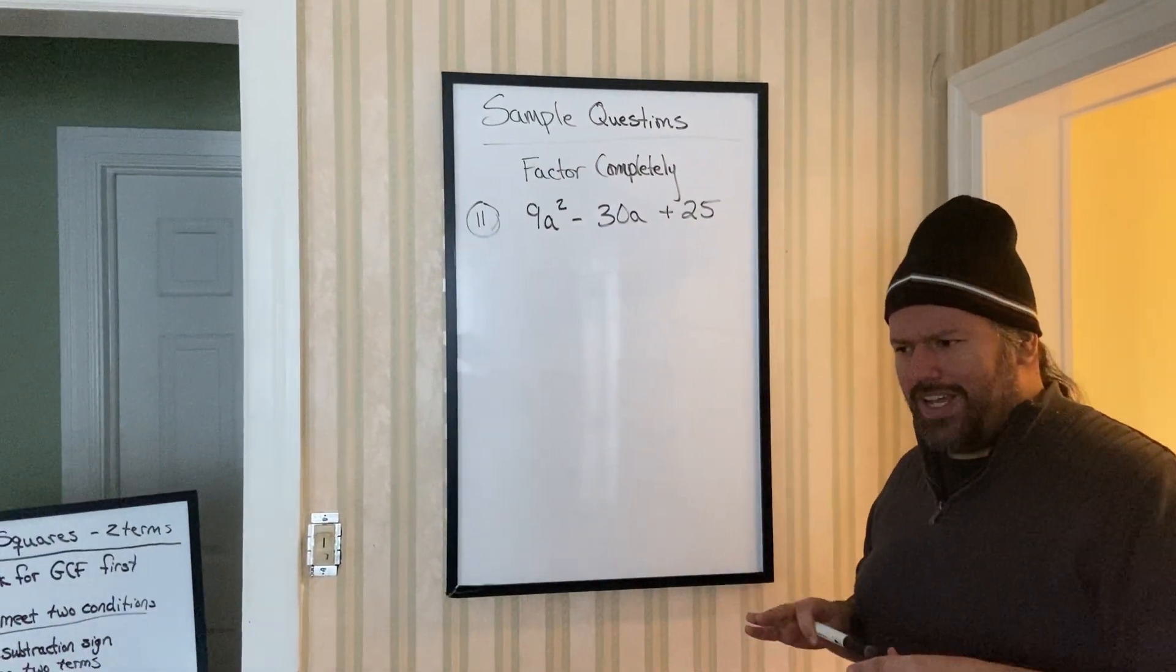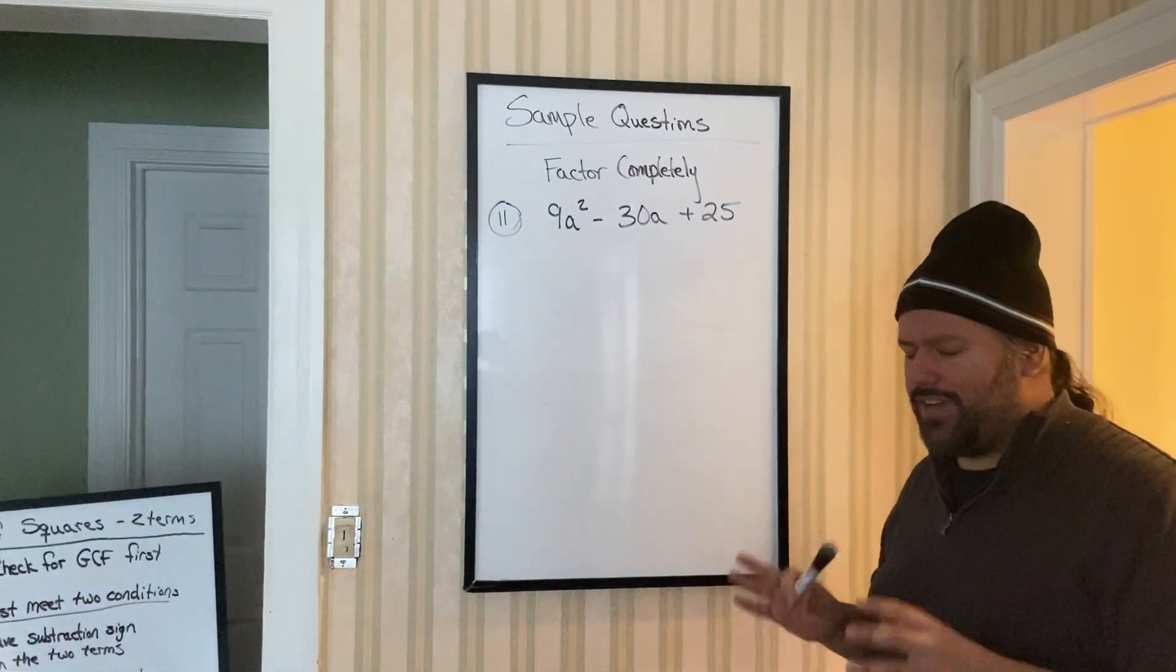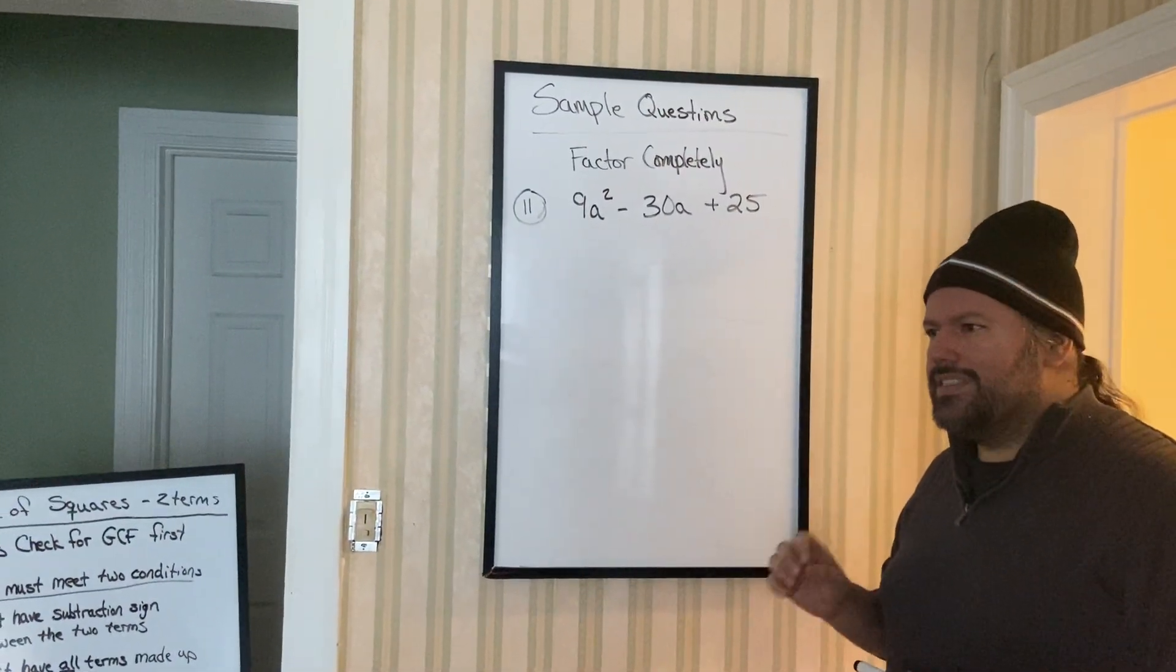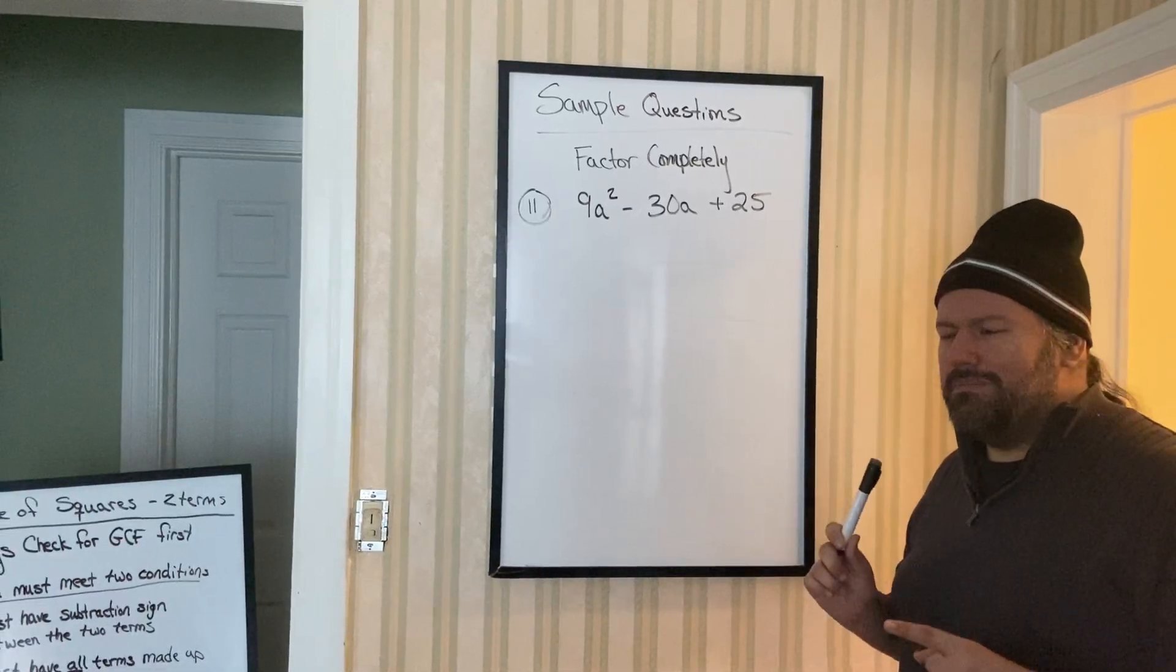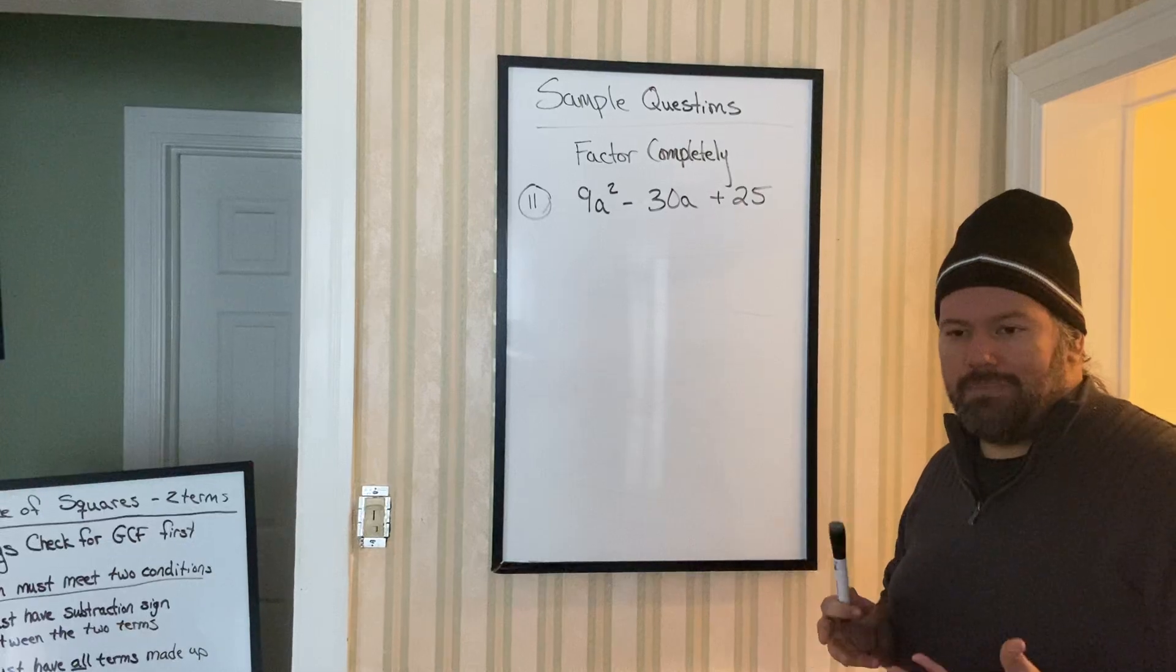So 6.5, half of the unit had to deal with factoring difference of squares. 6.5 also mentioned something called a perfect square binomial.